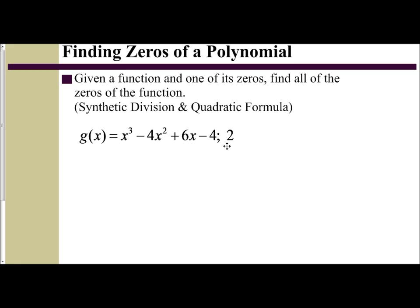If we know a zero, and I'm given the function g(x) = x³ - 4x² + 6x - 4, and one of its zeros is 2, to find the rest of the zeros I need to find the rest of the factors. So I set up my synthetic division first with my zero. I look at my degrees and exponents — they're all decreasing with no gaps.